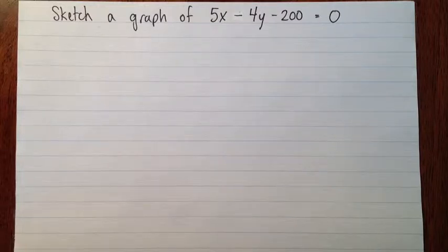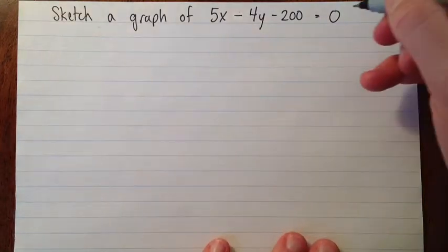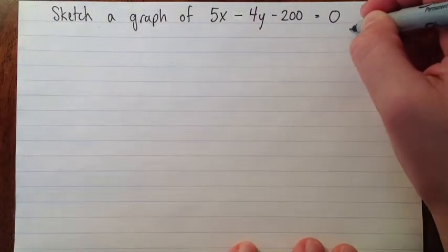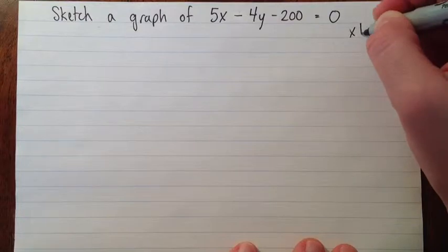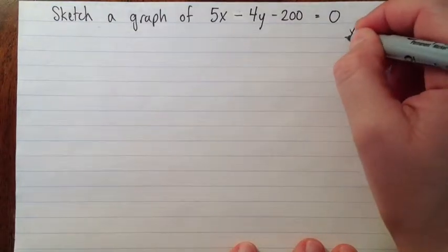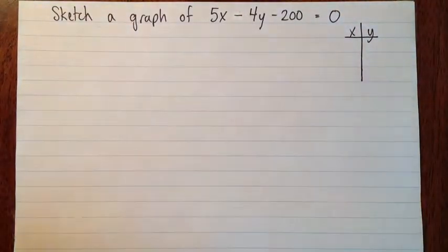So remember, the intercepts are the places where x equals 0 and y equals 0. And then we'll also find a third point just to double-check our calculations. Alright, so I'm going to make a little table of values over here, just a little xy table. It's big enough for three points.